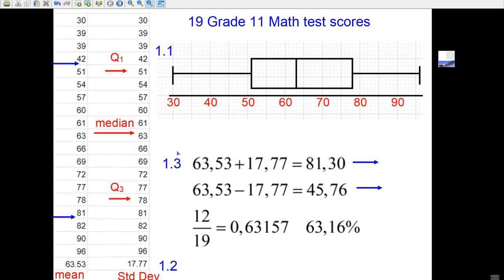Okay, we're going to do the statistics questions 1 and 2, and let's just start. They say there's 19 grade 11 math test scores, and you have to put them in order from smallest to biggest.